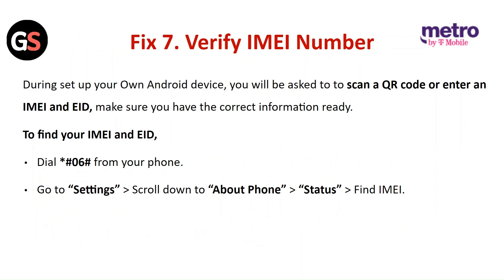Fix 7: Verify IMEI number. During setup on your Android device, you will be asked to scan a QR code and enter the IMEI or EID number — make sure you have the correct information ready. To find your IMEI and EID number, dial *#06# from your phone, or go to Settings, scroll down to About Phone, then Status, and find the IMEI number.